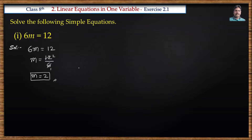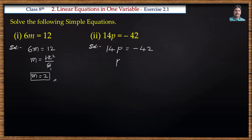This is the answer. Next problem: 14p is equal to minus 42. We need p value. So we transpose 14 to the right side and divide. 42 by 14: 14 threes are 42, so p is equal to minus 3.